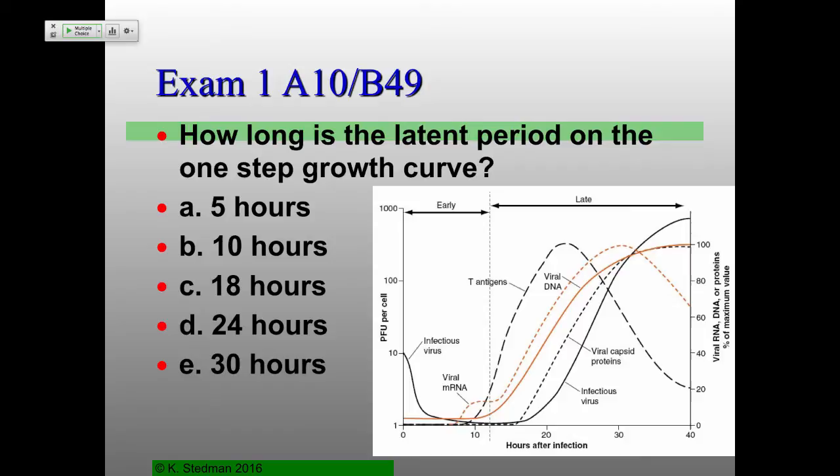A student asks: does the latent period start at zero, or at the bottom of the curve where it descends and levels out? The latent period starts at zero — that's when you get the first infection, exactly when the virions associate with the host. Maybe that was part of the confusion. Sorry about that.